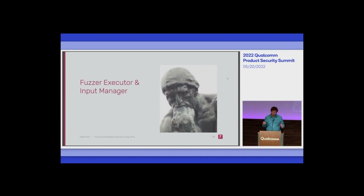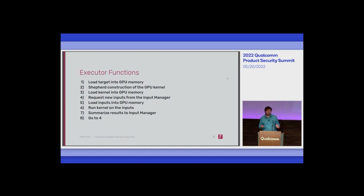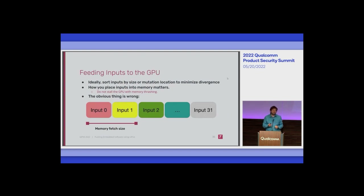Now that we hopefully have the target program as a GPU kernel that assembled and loaded correctly, you still need a way to feed it inputs and get outputs — that's the job of the executor. The naive way to do this, and the way I first did it, is to have a whole bunch of inputs in memory, tell your kernel 'here are my inputs, start fetching and executing them,' putting inputs in one after another. This is wrong, and it's not obvious why until you read GPU programming tutorials.